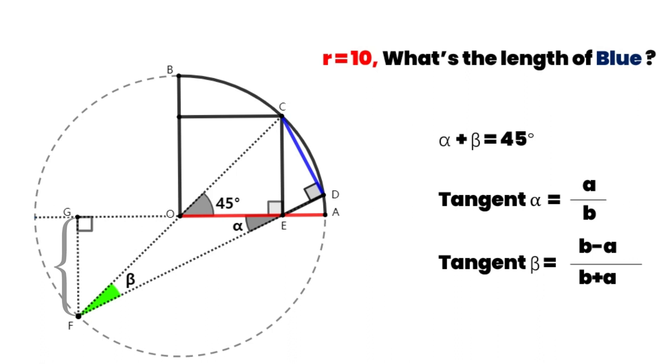It's easy for us to know that FG is equal to GO, which is equal to OE. So tangent alpha is equal to one half.